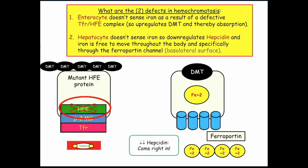Here's the disease. There are two defects. First, the enterocyte is not sensing iron because of the damaged HFE effect on the transferrin receptor, so it upregulates the transporter and you bring in a lot of iron. Second, you've taken in all that iron but you're also upregulating ferroportin because of a similar deficit — hepcidin is not degrading the ferroportin channels. So the iron you're taking in goes into circulation and deposits in your organs. That is hemochromatosis.